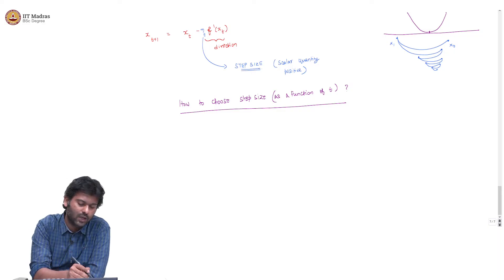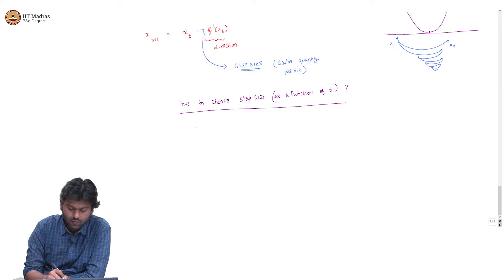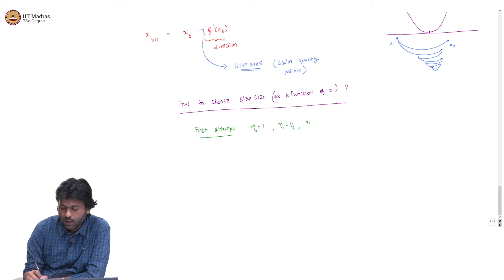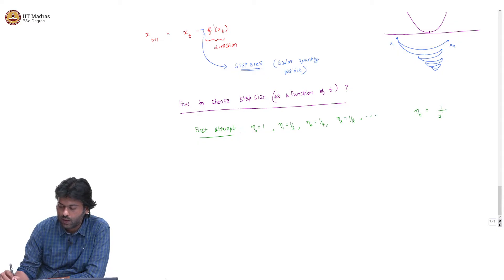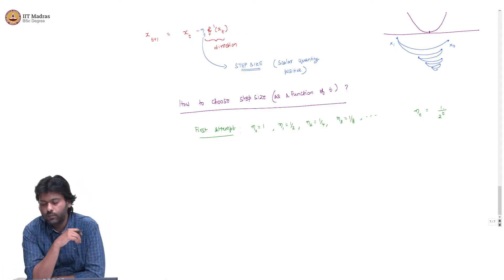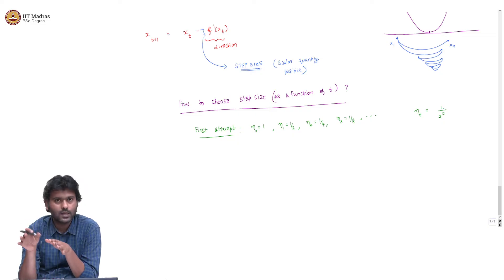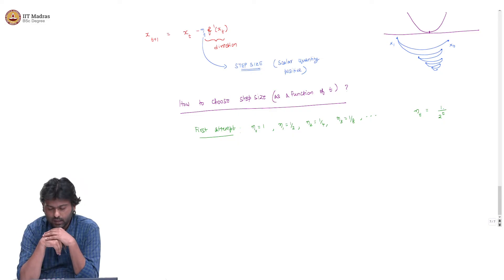Let us take one example and see if that makes sense. Here is a first attempt at coming up with a step size sequence. The sequence is: eta_0 = 1, eta_1 = 1/2, eta_2 = 1/4, eta_3 = 1/8, and so on. In general, eta_t = 1 / 2^t. Basically, you are halving your step size at every step. It starts with 1, then becomes half, then quarter, and so on — it decreases as t increases, which seems like a reasonable first attempt.